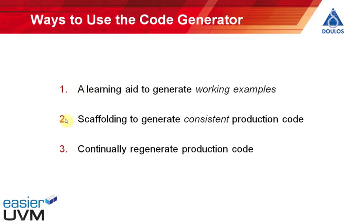The second and slightly more sophisticated way is to use the code generator as scaffolding to generate early versions of your production code. You start off using the code generator to generate some of the actual code you'll use on the project, but then at a particular point you tear down the scaffolding — you stop using the code generator and take the generated code as the basis for your own code, editing it manually. This has the benefit that all the production code starts off being consistent because it was automatically generated, and you can then add all your project-specific code to it.